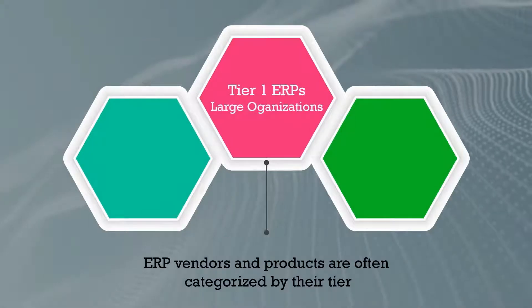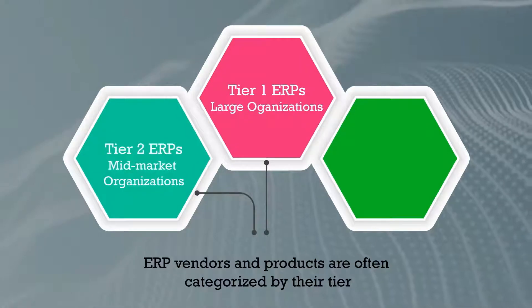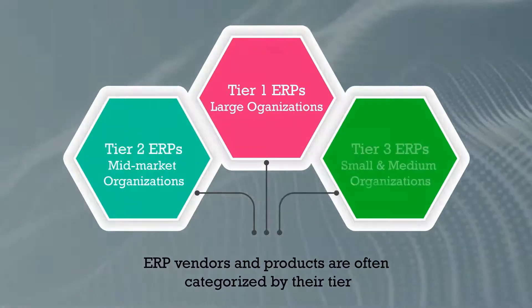ERP vendors and solutions are often referred to by tier. Tier 1 refers to ERPs for large and complex organizations. Tier 2 refers to ERPs that are geared towards mid-market organizations.